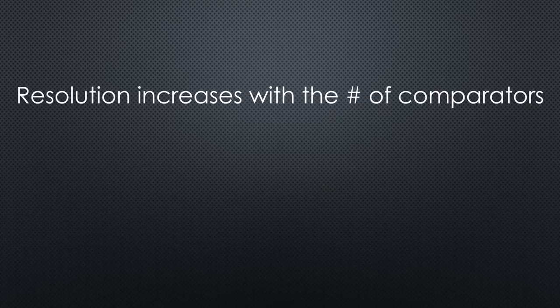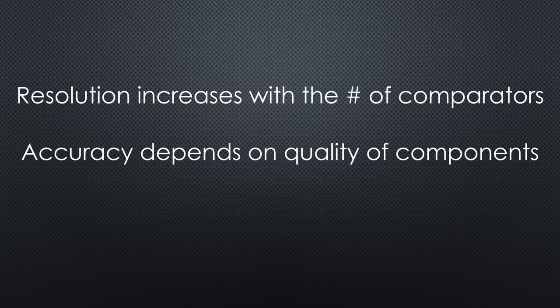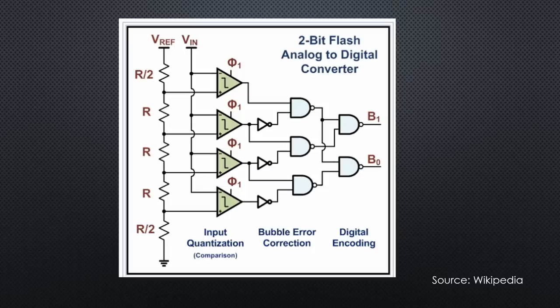Resolution automatically increases with the number of resistors and comparators. Accuracy depends on their quality. Both are cost drivers for chips. The more resolution or the more accuracy, the more expensive. Not to forget speed, which is also a significant cost driver.